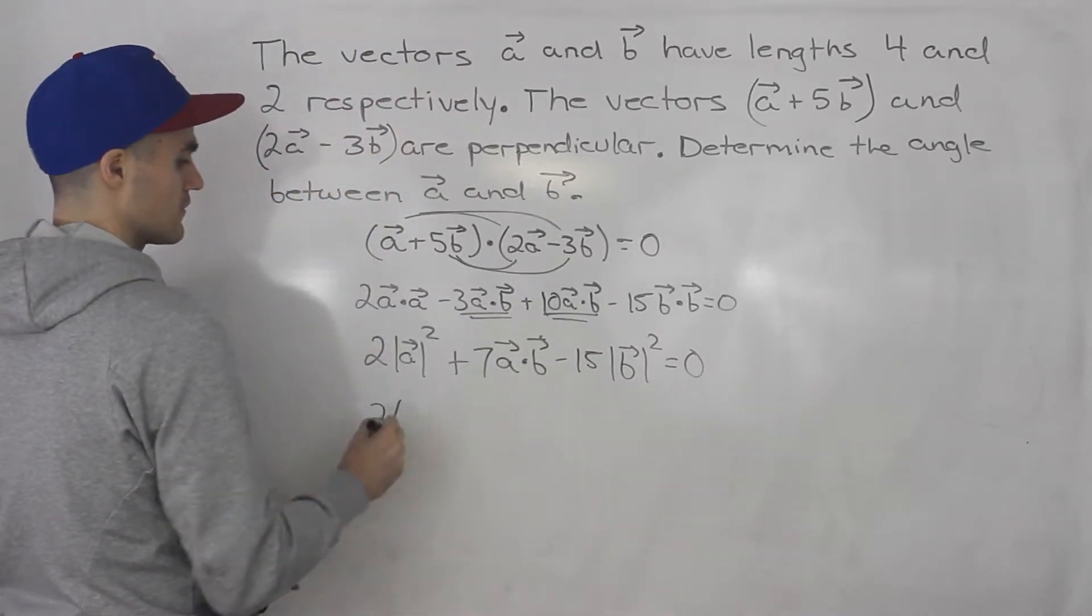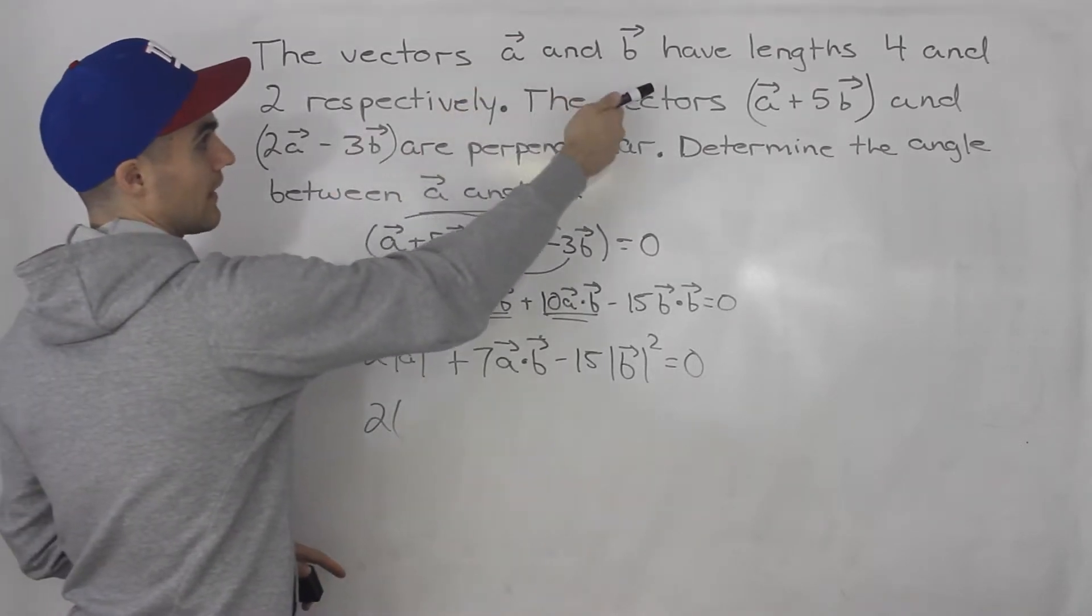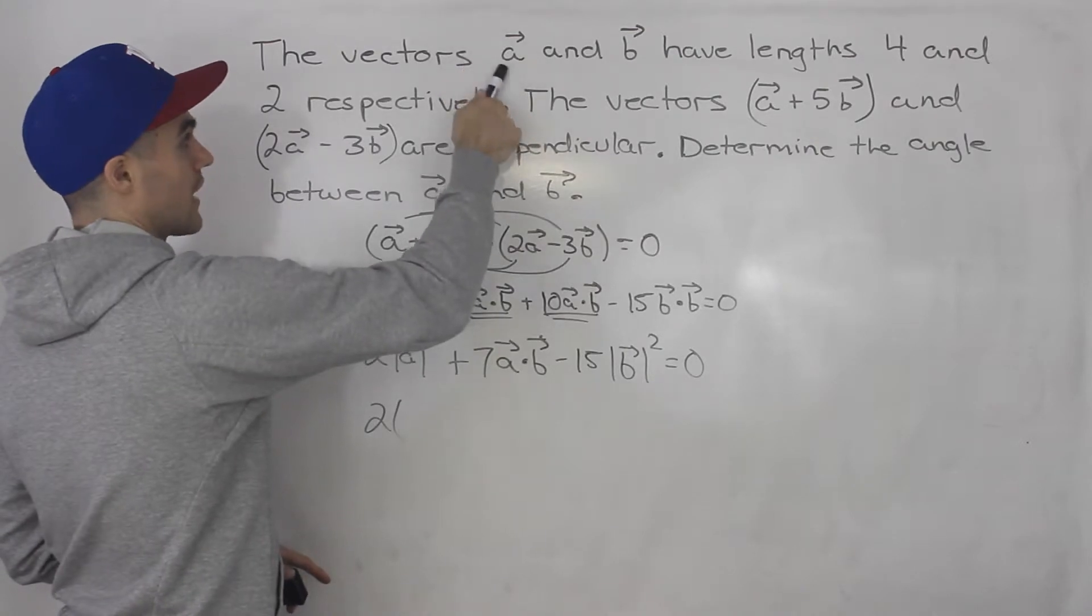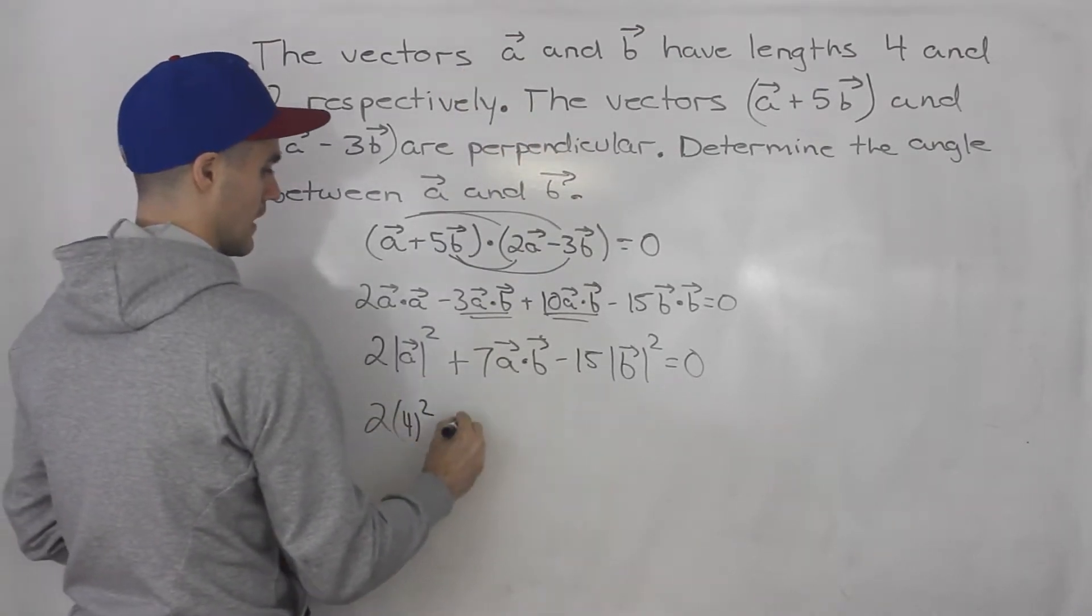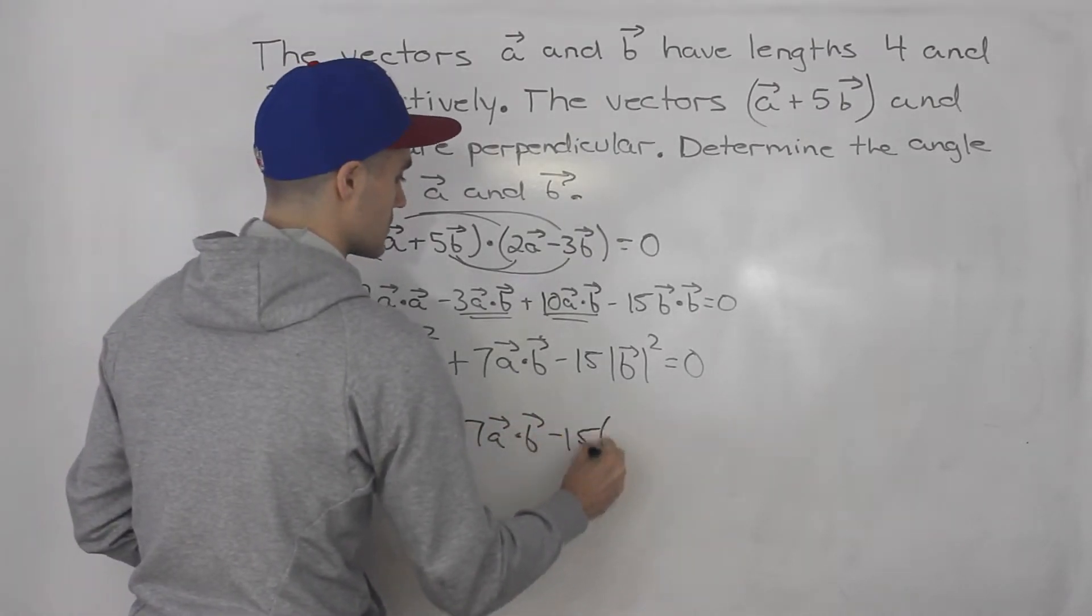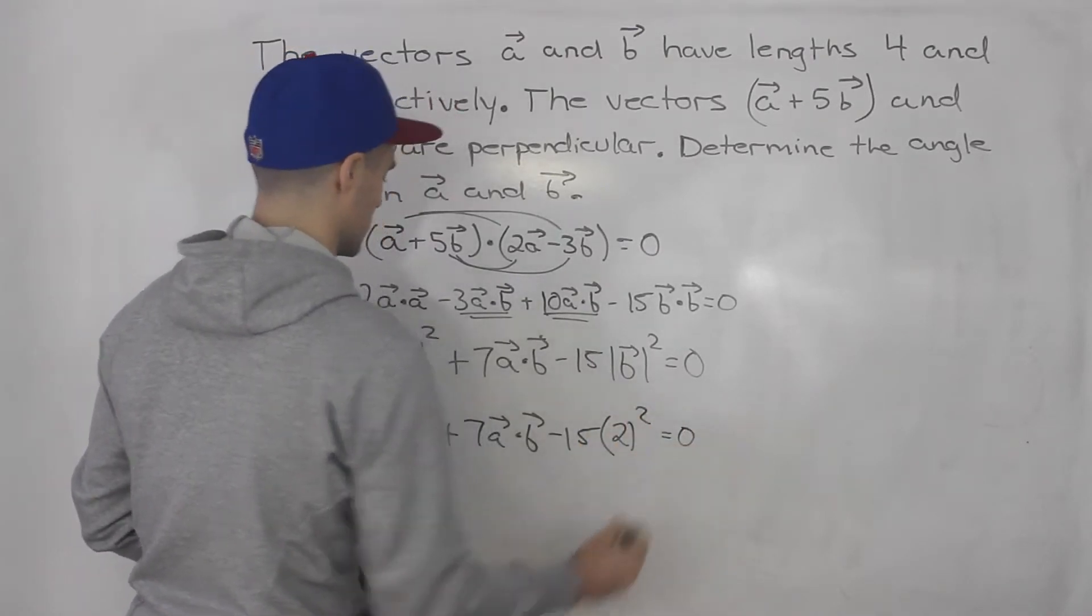Now notice how the magnitude of a we are given. We're told that the vectors a and b have lengths 4 and 2 respectively. So that means vector a has a magnitude of 4. And then vector b has a magnitude of 2. So 2 squared goes there.